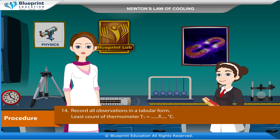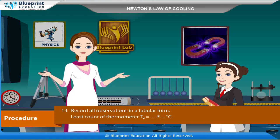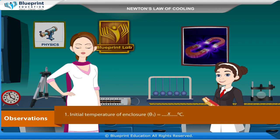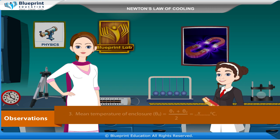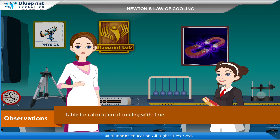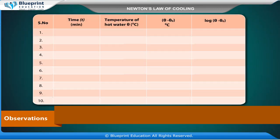Least count of thermometer T1 = x °C. Least count of thermometer T2 = x °C. Least count of stopwatch = x seconds. Observations: Initial temperature of enclosure θ₁ = x °C. Final temperature of enclosure θ₂ = x °C. Mean temperature of enclosure θ₀ = (θ₁ + θ₂) / 2 = x °C. Table for calculation of cooling with time: Serial number, Time T (minutes), Temperature of hot water θ (°C), θ − θ₀ (°C), log(θ − θ₀).